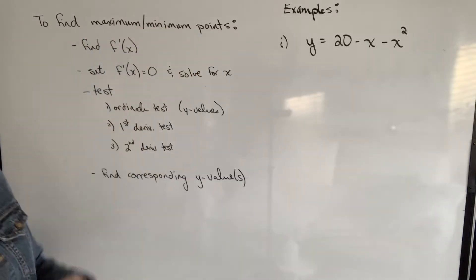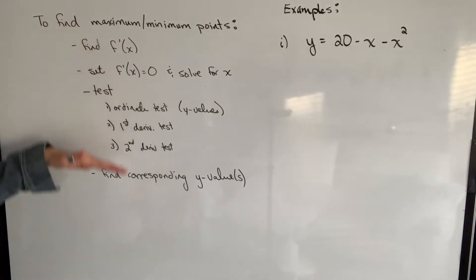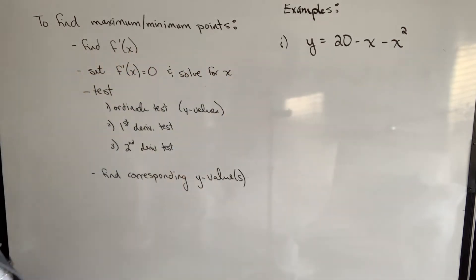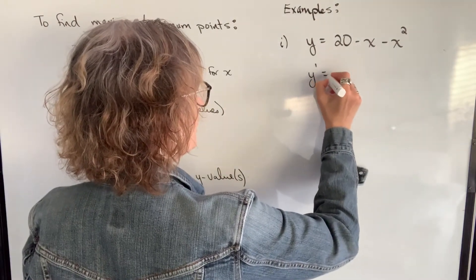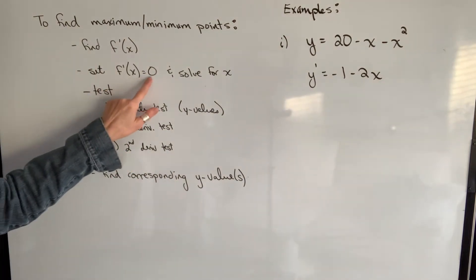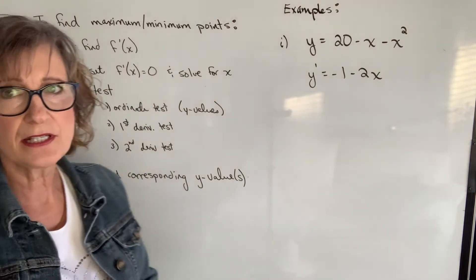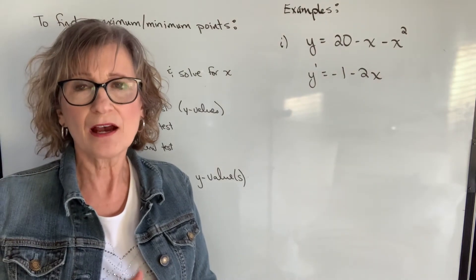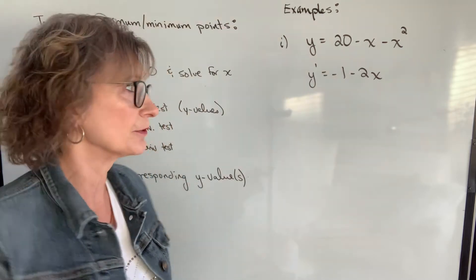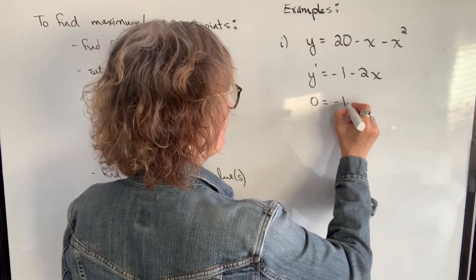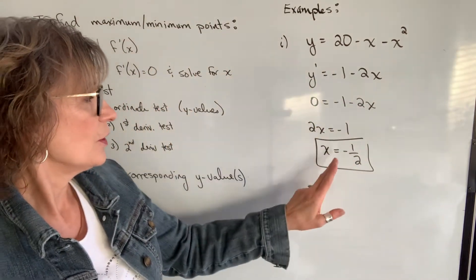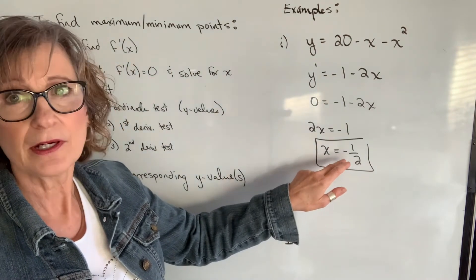So let's put this into practice. To find any maximum or minimum points we're going to go through these steps. We're going to start off by finding the derivative — and we'll go through the steps using this example. So the derivative here is negative 1 minus 2x. Next step, we're going to set the derivative equal to zero and solve for x, because we know that extreme points have to have a derivative equal to zero — the slope of the tangent line at that point is zero.